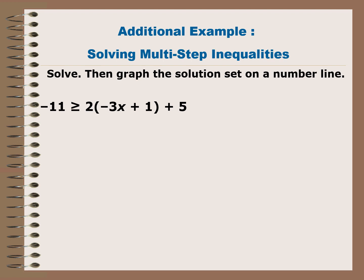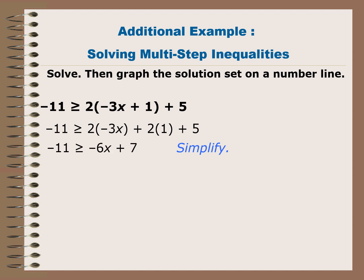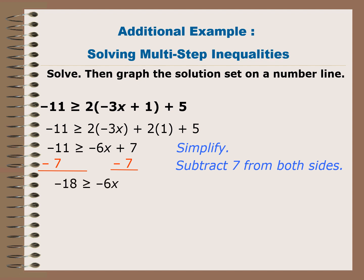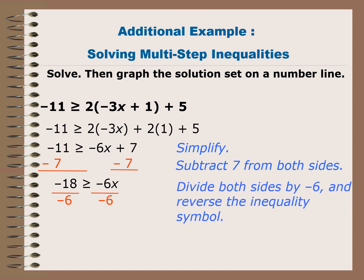If we have negative 11 greater than or equal to 2 times the quantity negative 3x plus 1, plus 5, we distribute 2 inside the parentheses and simplify to negative 11 less than or equal to negative 6x plus 7. Subtracting 7 from both sides gives negative 18 greater than or equal to negative 6x. Dividing both sides by negative 6 — a negative number — reverses the symbol, so x is greater than or equal to 3. Graphing: solid dot, direction to the right.